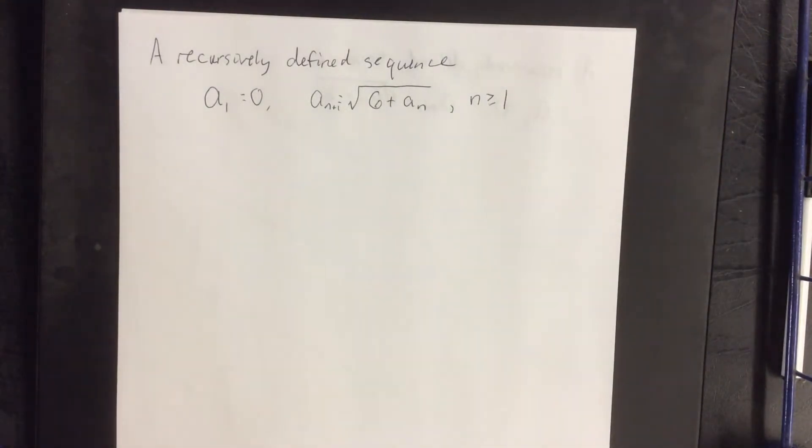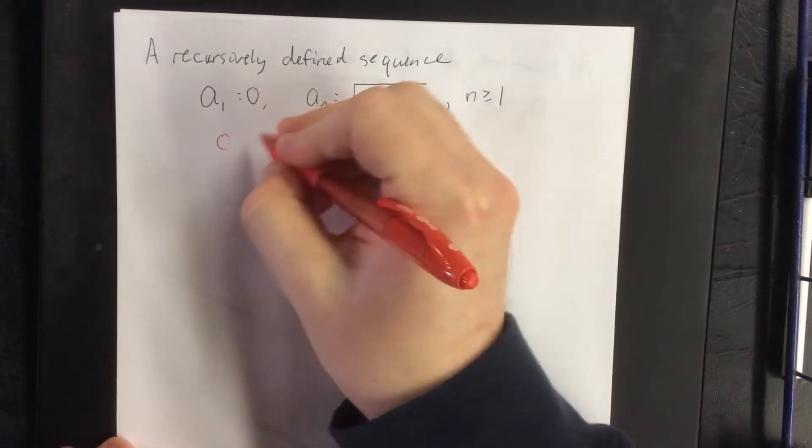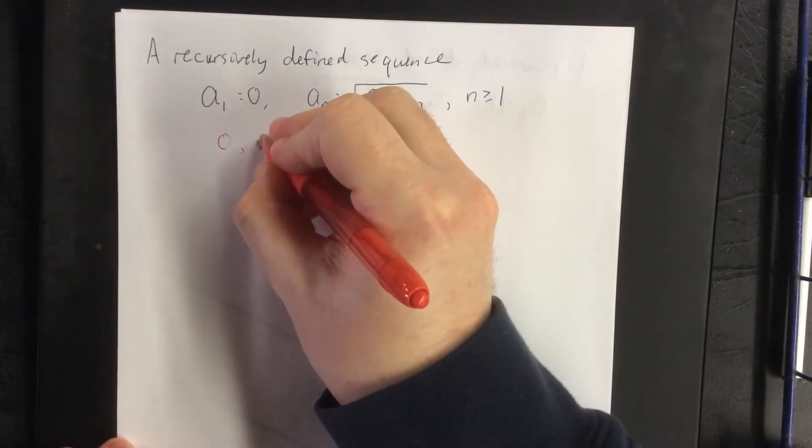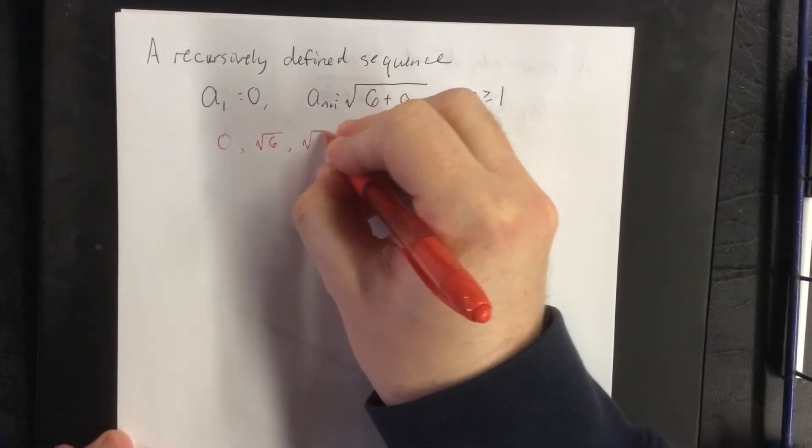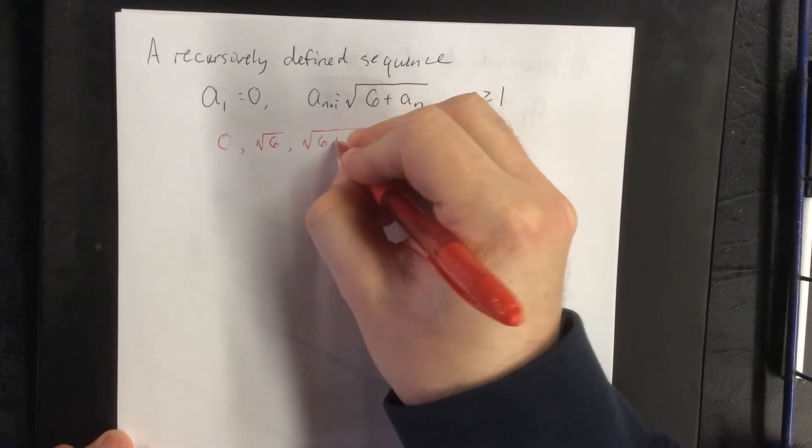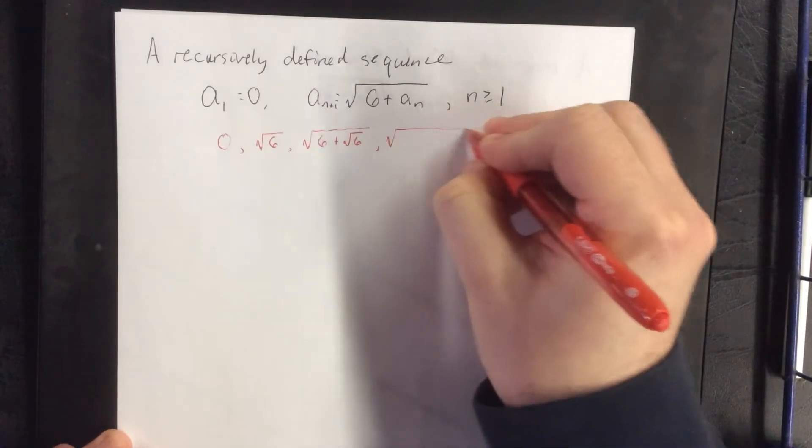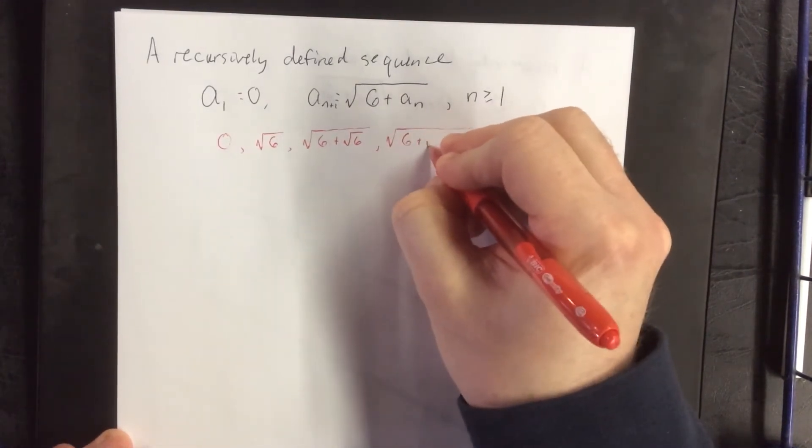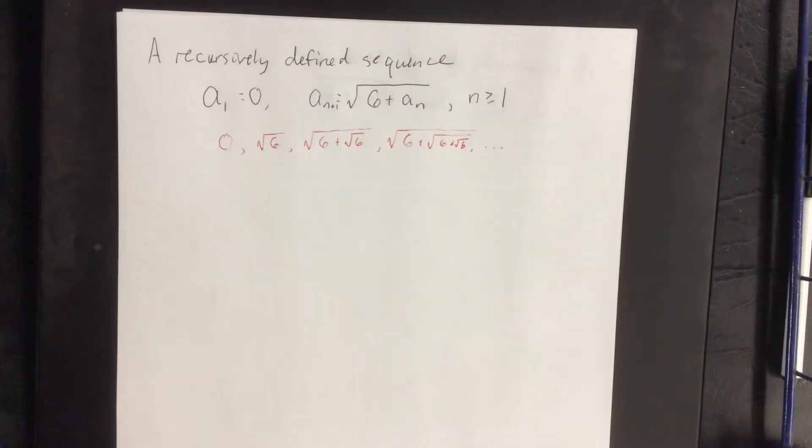So just as an example, this means that the first term will be 0, the next term will be the square root of 6 plus 0, the next term will be the square root of 6 plus the square root of 6, the next term will be the square root of 6 plus the square root of 6 plus the square root of 6, and so forth.